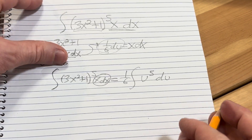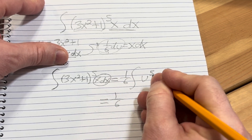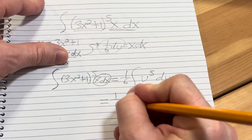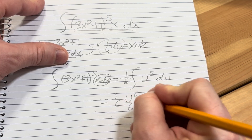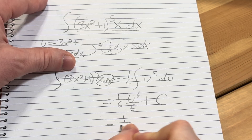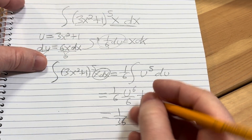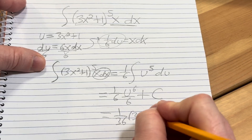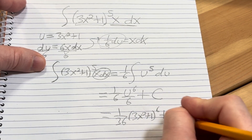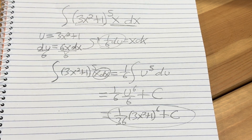Now we're ready to perform the integration. This is equal to 1/6 — here you add 1 and divide by the result using the power rule — so this is u to the 6th over 6 plus C, which is our constant of integration. 6 times 6 is 36. And u was 3x squared plus 1, so this is 3x squared plus 1 to the 6th power over 36, plus our constant of integration, capital C. And that would be the final answer.